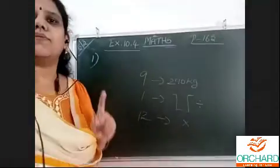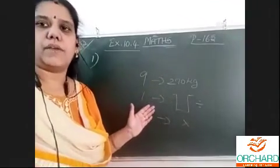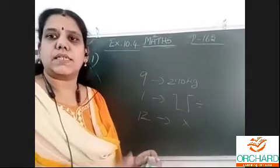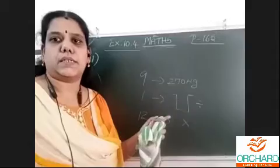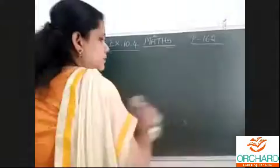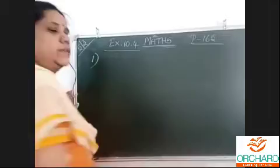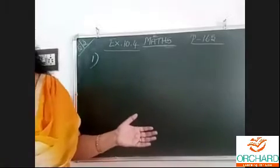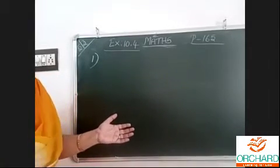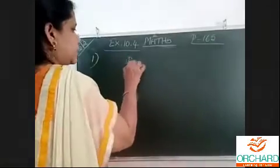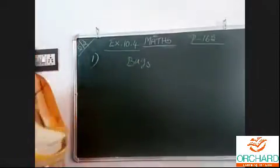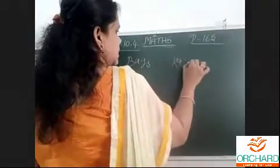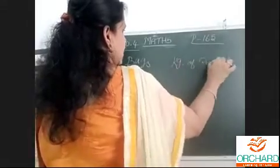This is one way of doing — the normal way. Even if you do this way and get the answer, I will give full marks. But today we are going to see ratio and proportion. In ratio and proportion, I will write like this: Bags — how many bags — and kg of rice.